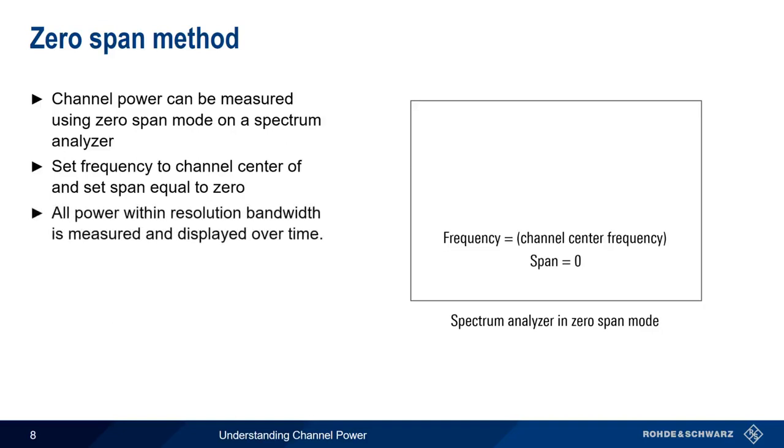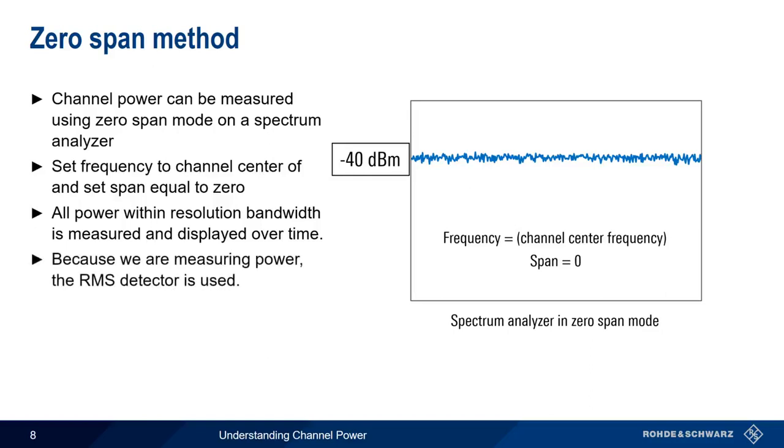The analyzer measures the power within the resolution bandwidth, and channel power appears as a line on the display. Power can be read off manually or using a marker. Remember that in zero span, we need to use the RMS detector because we're measuring power.